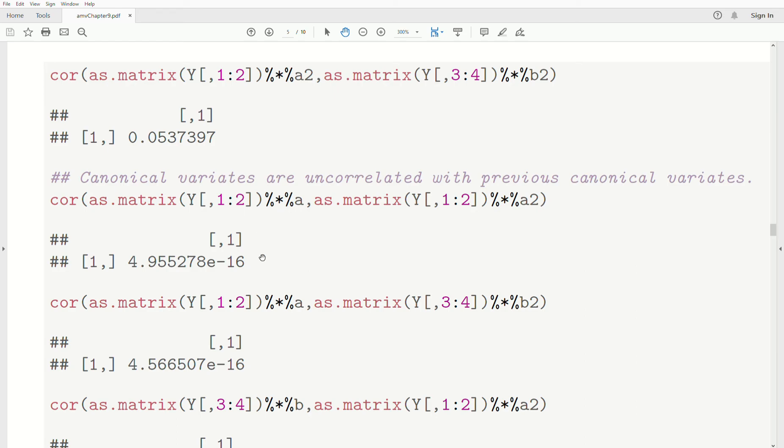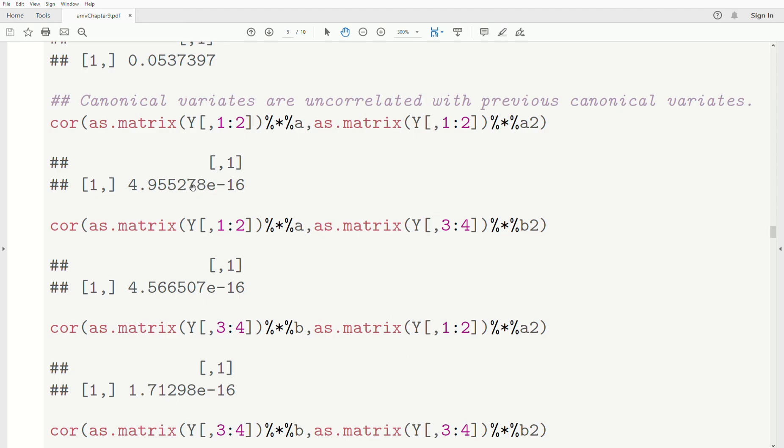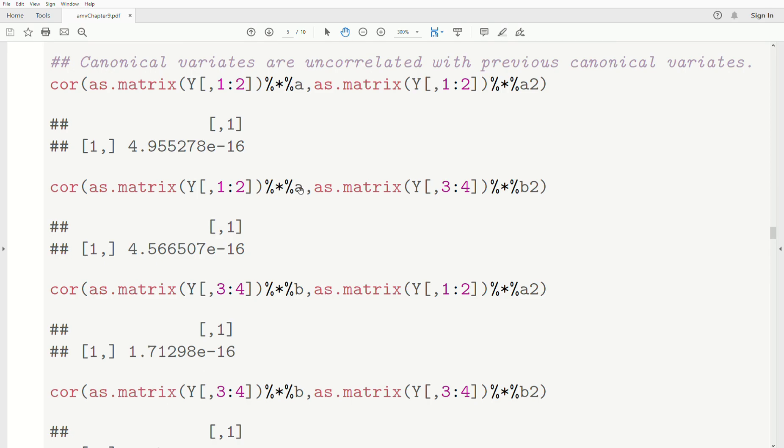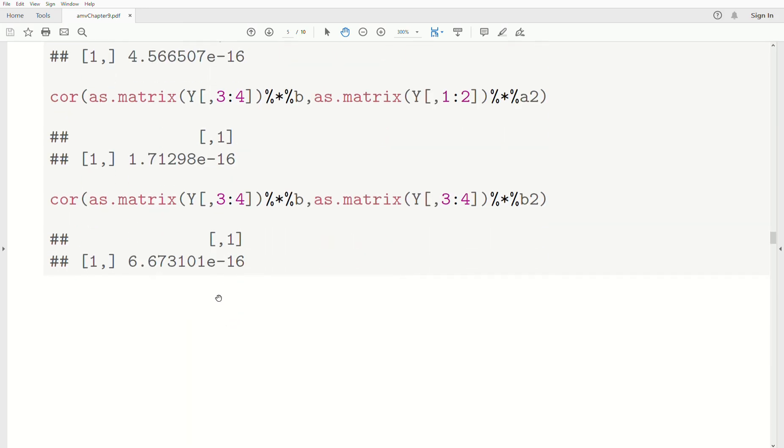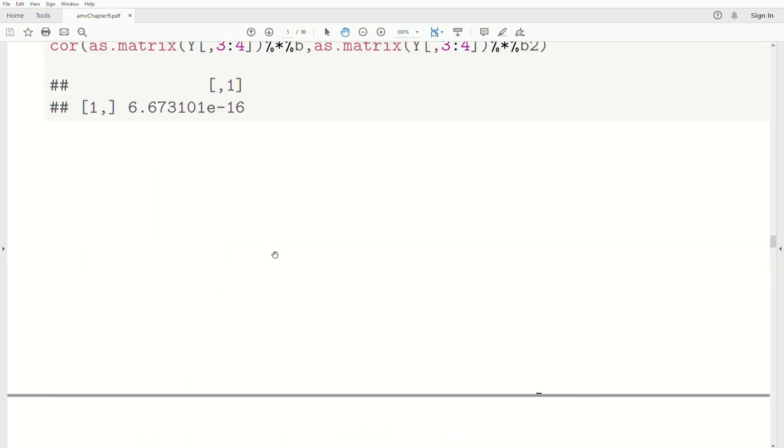It just illustrates that the correlation between the variants, the second canonical variates are uncorrelated with all the previous variants. So we take A and A2. So it's different linear combinations. Look at the correlation. It's pretty much 0. Lots of 15 zeros in it. And so, you know, machine equivalent to 0. And then we take linear combinations between the A and the B2. It's 0. This is just showing you that they are 0. In theory, they're exactly 0.